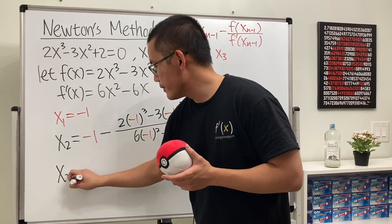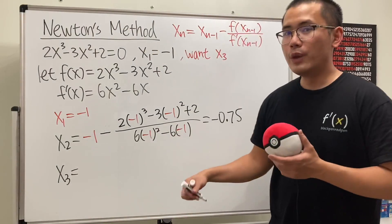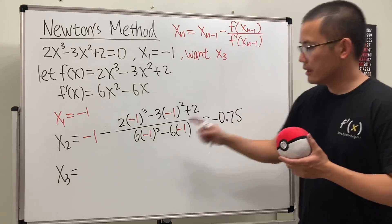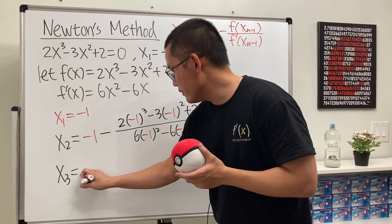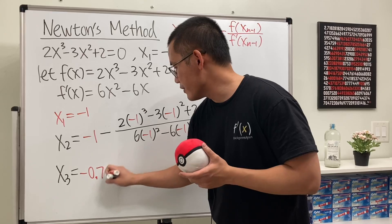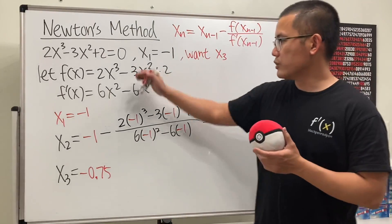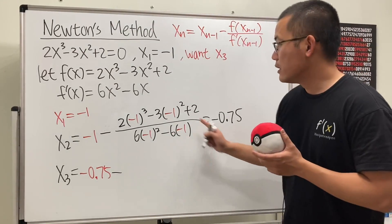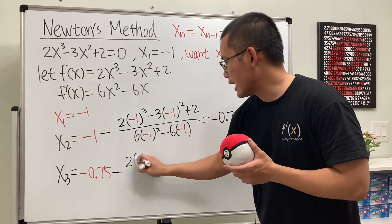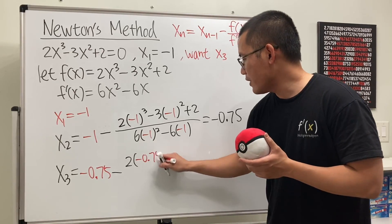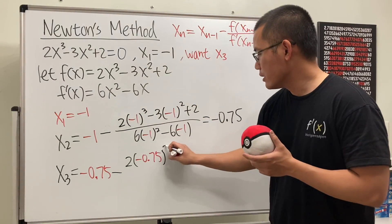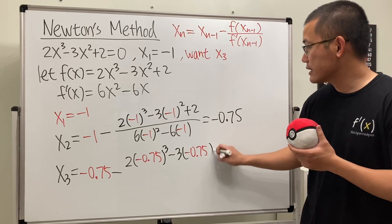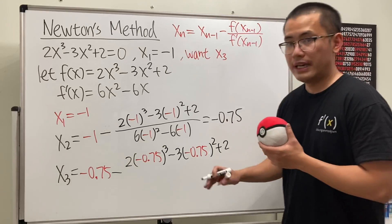And then for x3, which is the next x value, we are going to use this as the previous x value and then just do the same thing. So, this right here goes here. So, it's negative 0.75. And then we put this into the original and right here, it's subtract. And then we have this right here, which is 2 times negative 0.75 to the third power and then minus 3 times negative 0.75 squared and then plus 2.